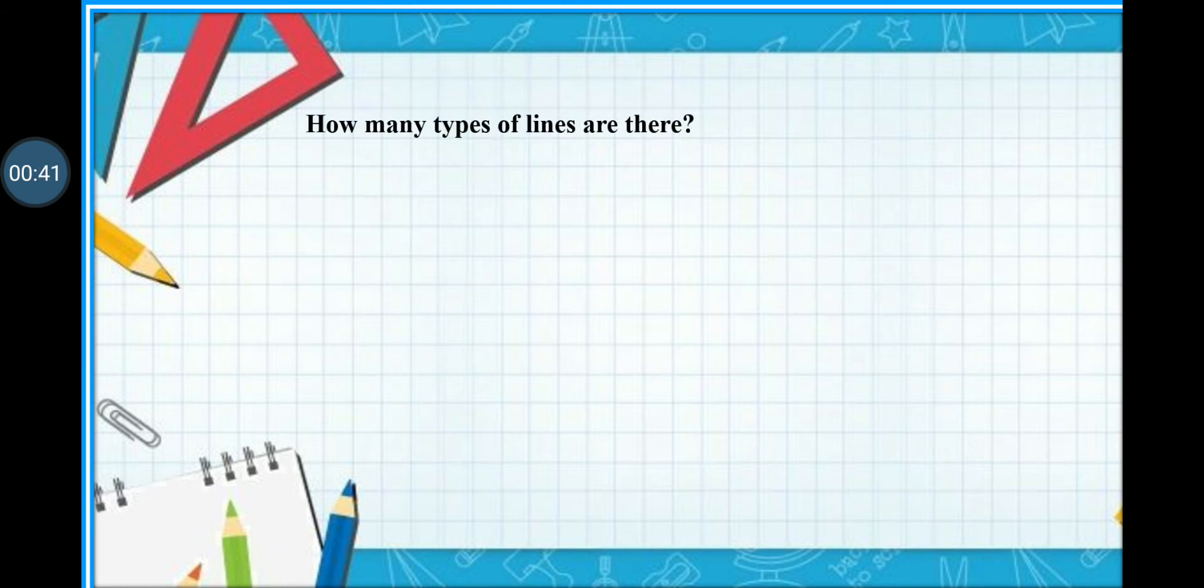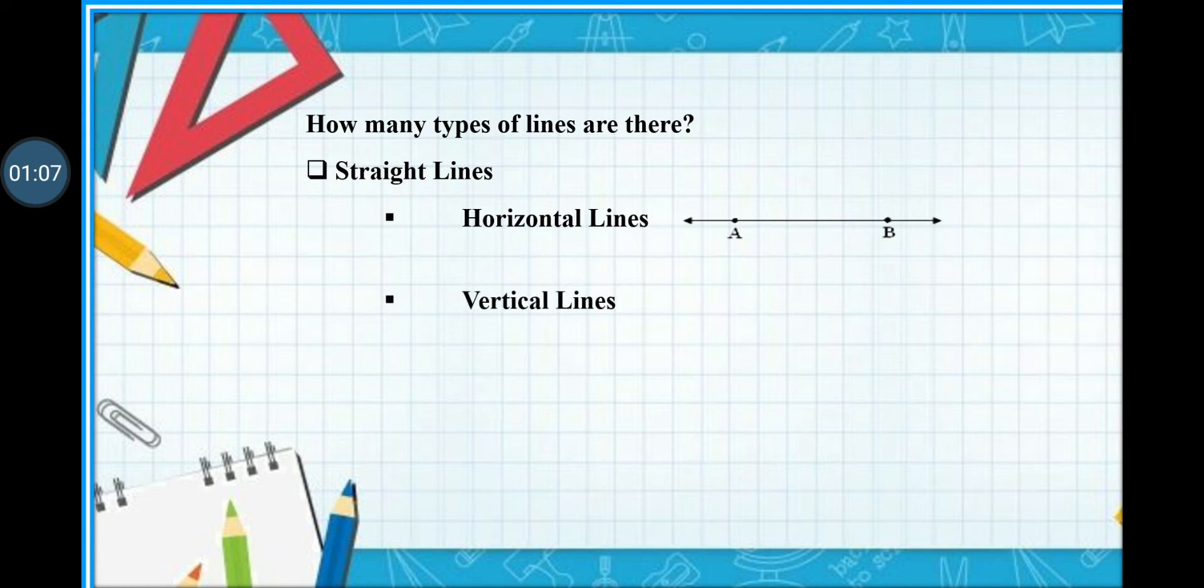My dear students do you know how many types of lines are there? Yes we have mainly two types of lines. One is straight line and in the straight line again we have two types of lines. One is called horizontal line. You can see the horizontal line is always in this position. The next is vertical lines and vertical lines will be always in this position. The second type of line is the curved line and the curved line is always in this form.